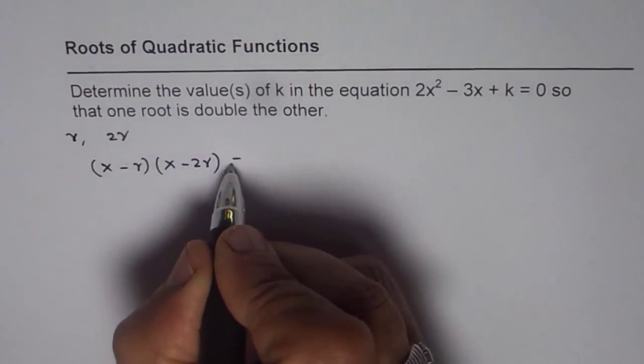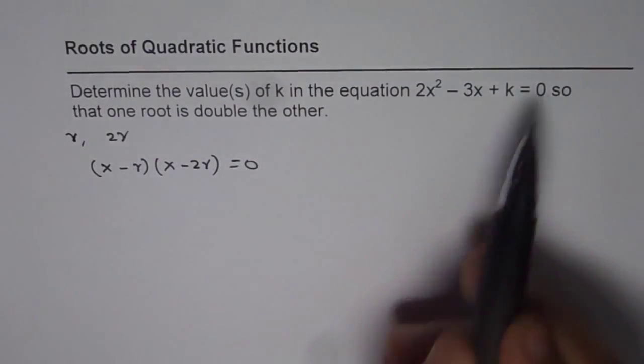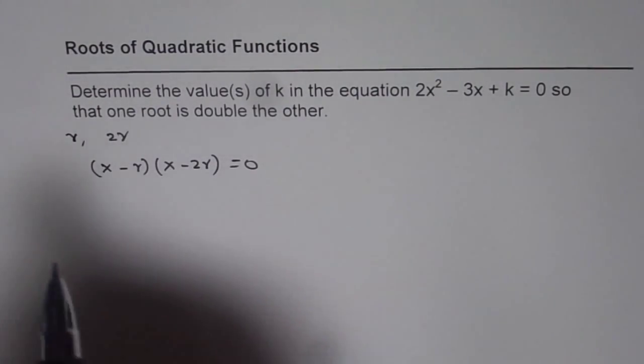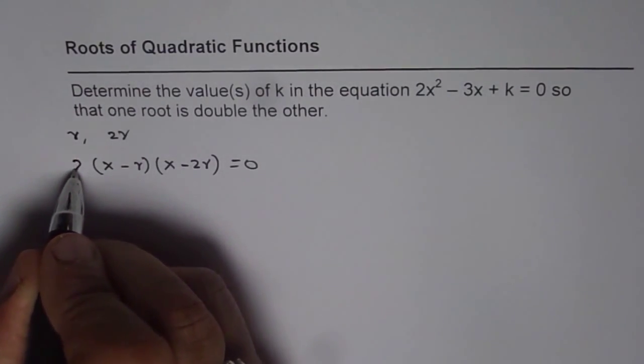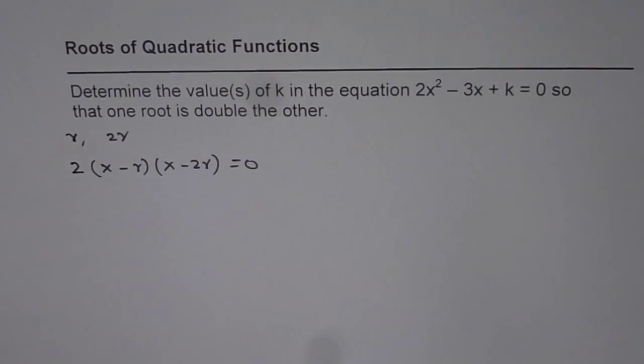Now, the question is 2x squared minus 3x plus k equals to 0. So, leading coefficient is 2. It is a good idea to multiply this by 2 so that we can compare our equation with the given equation. That is the strategy.